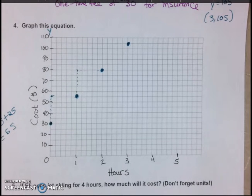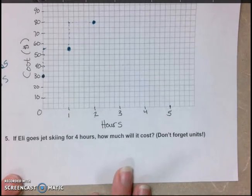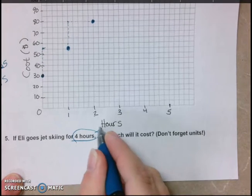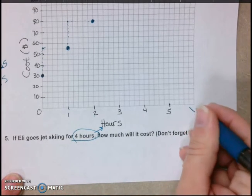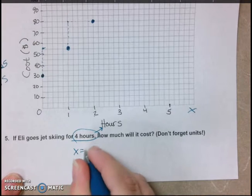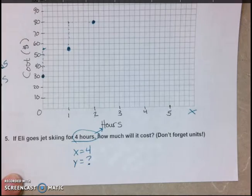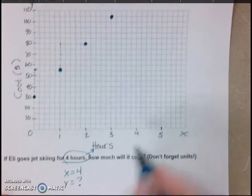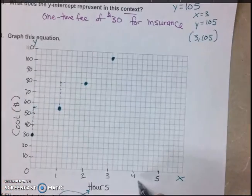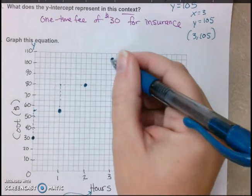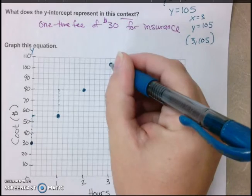Now that second way is useful for a question like number 5. If Eli goes jet skiing for 4 hours, how much will it cost? So 4 hours, so think hours is the x. This is our x. So when x equals 4, how much will it cost? So what's y going to equal? You can use your equation. You can use your graph. So you can see at 4 hours here, you can go up and see what's going to cost. They don't have a dot there, but you can always count slope up 25.